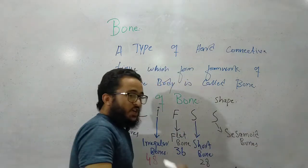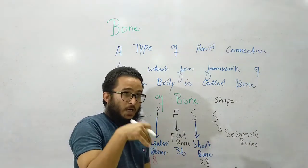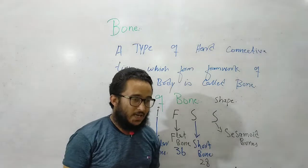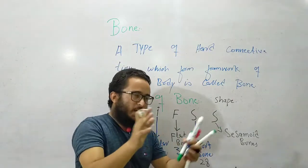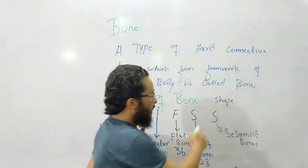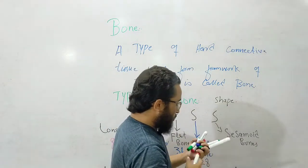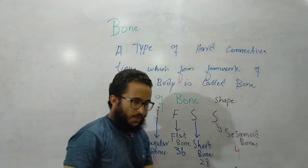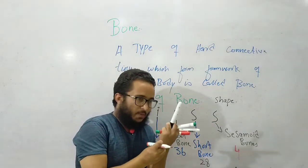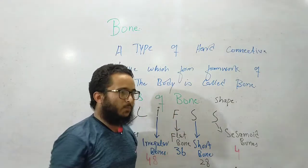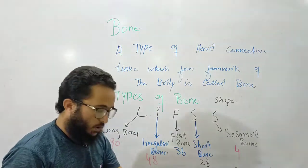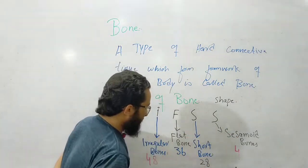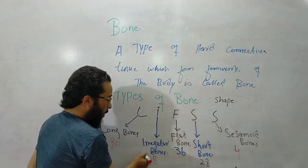Sesamoid bones have a shape like a sesame seed. These bones are double bones for tendon attachment. The tendons attach through these bones. These are sesamoid bones, found in the face and other areas.